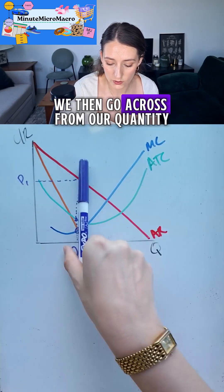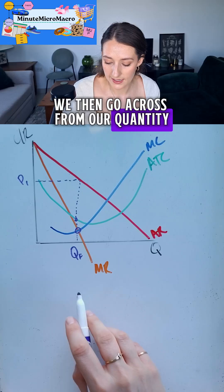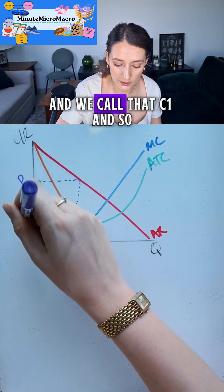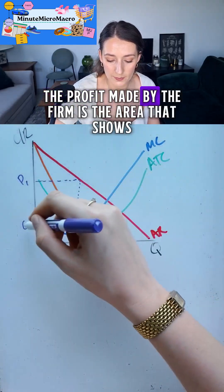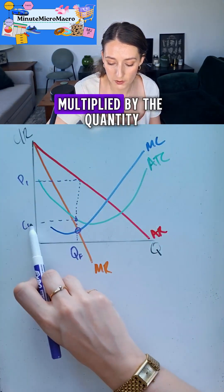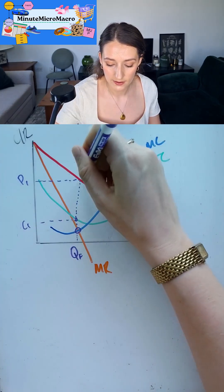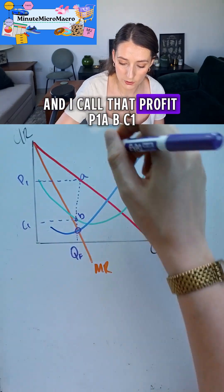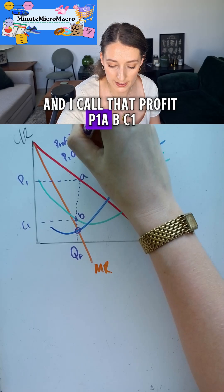We then go across from our quantity and we hit average total cost and we call that C1, and so the profit made by the firm is the area that shows between the difference between the price and the cost multiplied by the quantity. And I call that profit P1ABC1.